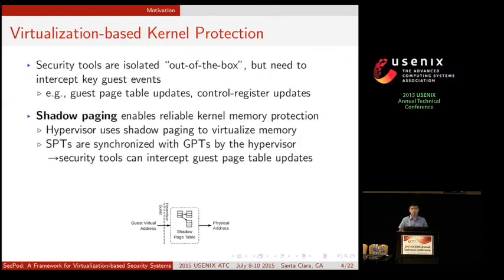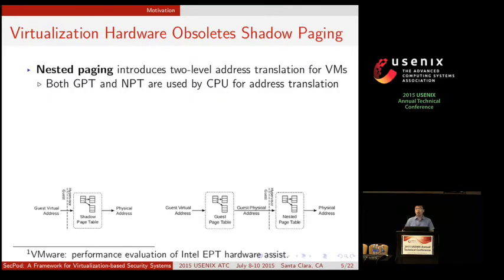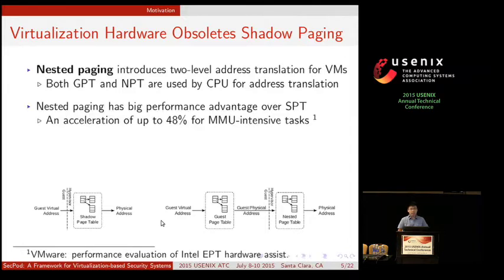Therefore, security tools in the hypervisor can intercept each page table update, and those shadow page tables supersede the guest page tables for address translation. To simplify hypervisor design and improve performance, processor vendors proposed the virtualization hardware extension. One of the features is nested paging. With nested paging, the guest virtual address will be translated twice into the physical address, and nested paging can bring a lot of performance improvement over shadow page tables — for example, MMU-intensive tasks get 48% performance improvement with nested paging.